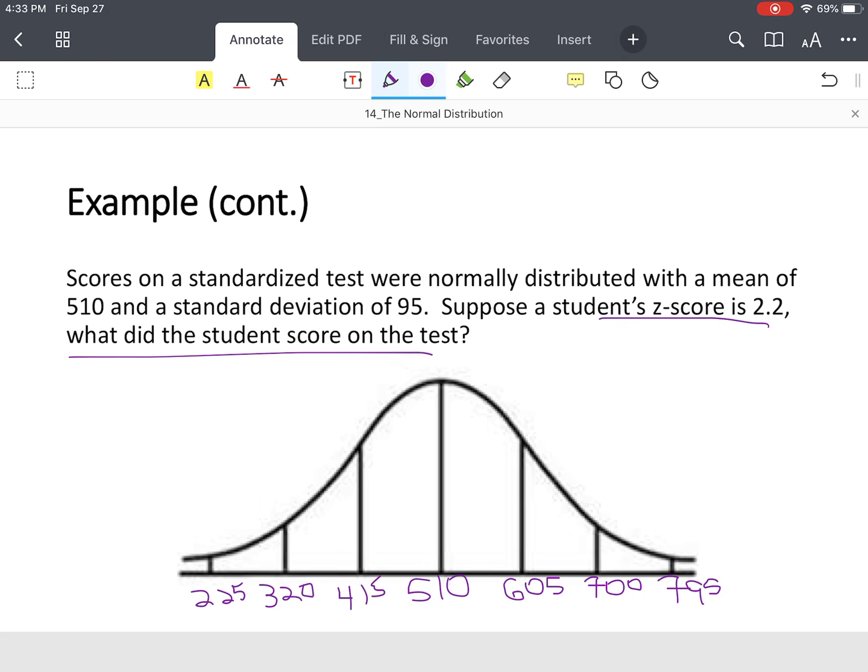From the very beginning, they told me the z-score was 2.2. This is one standard deviation, this is two standard deviations above, and 795 is three standard deviations above. So that score should fall somewhere between 700 and 795. We know the z-score, so we take our formula: 2.2 equals x minus the mean 510, divided by our standard deviation 95.